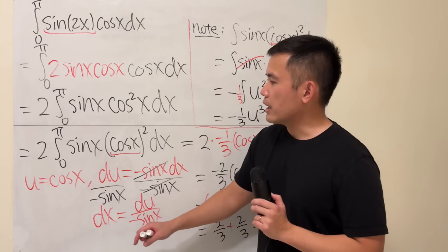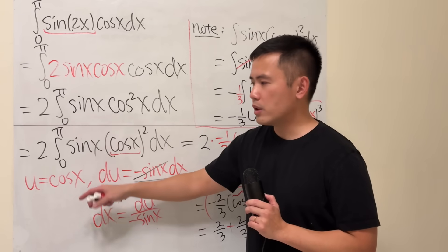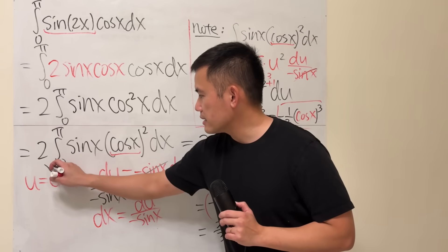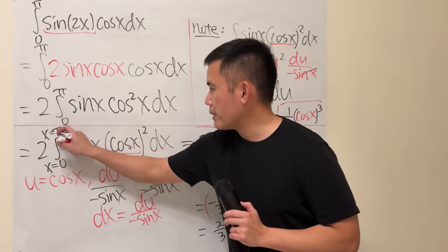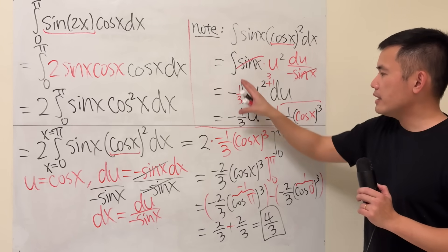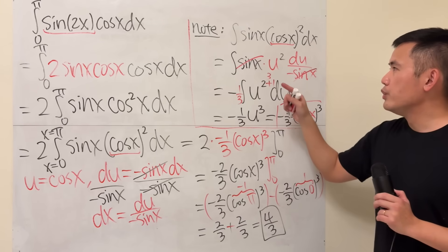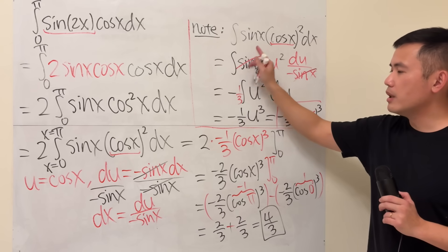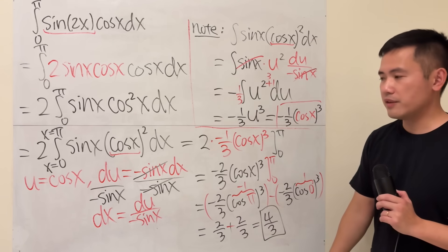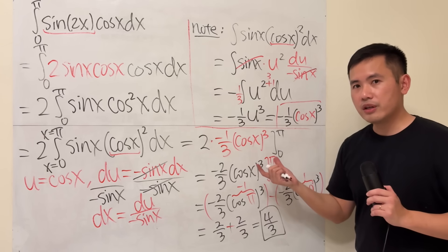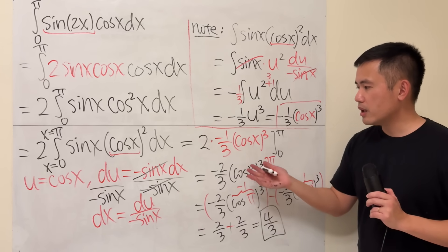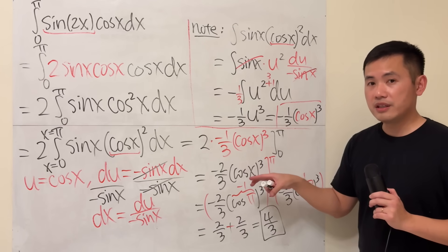There are ways that you can actually just work out the integral in the u world. So because this right here is x equals 0, x equals pi, if you want to end up everything in the u world, you will have to change the values right here. But that could be a discussion for another video. I did this right here just to show you this is how the solution did it.